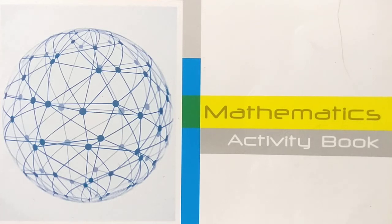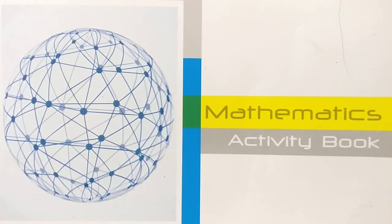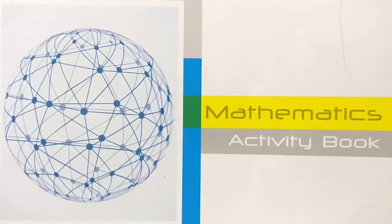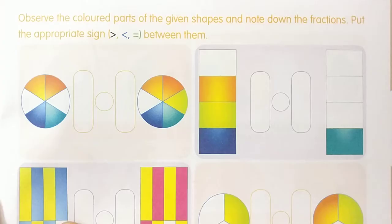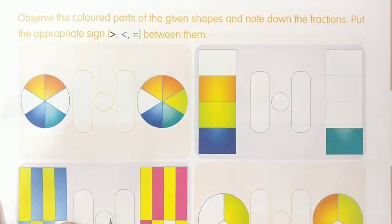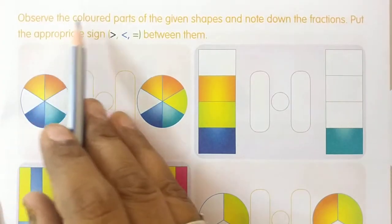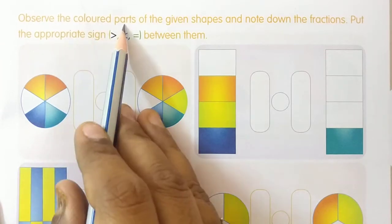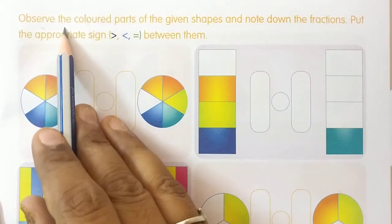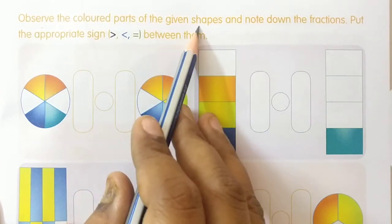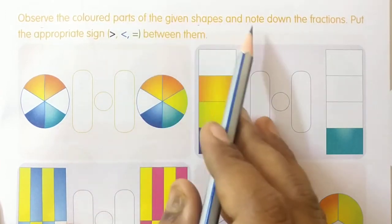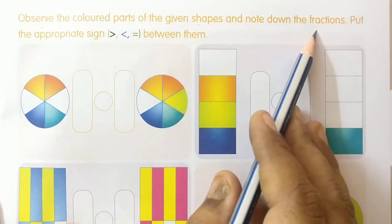Good morning 4th class children. All of you open your mathematics activity book and turn to page number 15. Now see the question children. Observe the colored parts of the given shapes and note down the fractions.